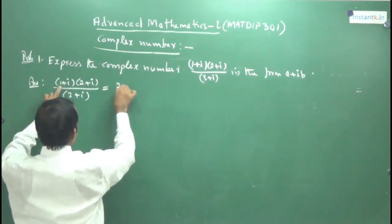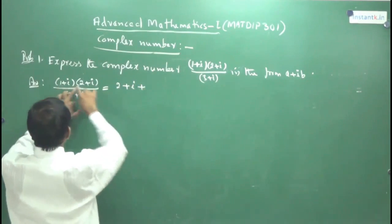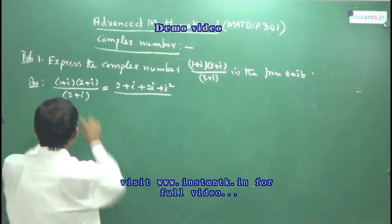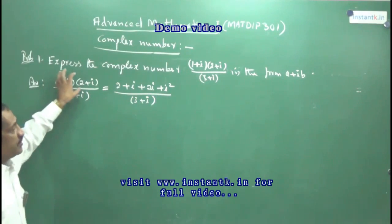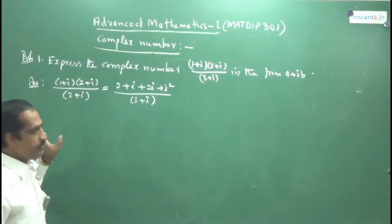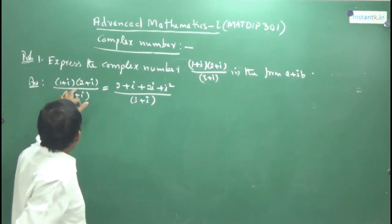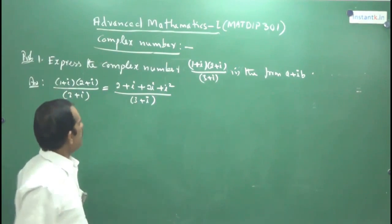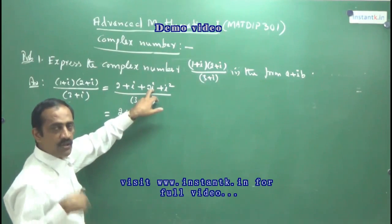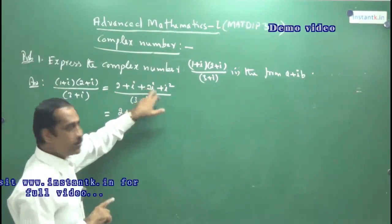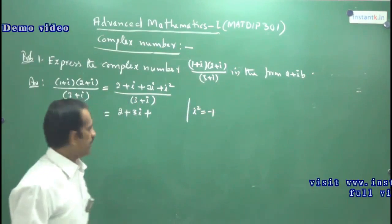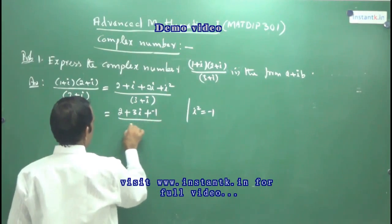Expanding: 1×2 = 2, then 1×i = i, then i×2 = 2i, then i×i = i². Make sure to put brackets when there is more than one term. Collecting terms: i + 2i = 3i, and i² = −1. So the numerator simplifies to 2 + 3i + i² = 2 + 3i − 1 = 1 + 3i, divided by the denominator 3+i.